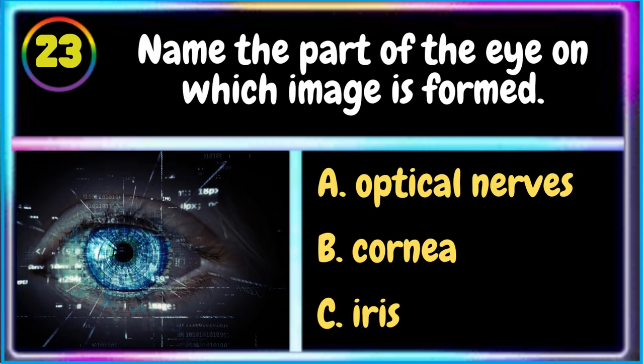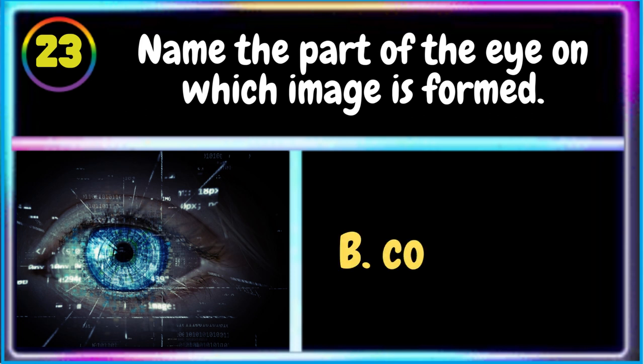23. Name the part of the eye on which image is formed? A. Optical nerves B. Cornea C. Iris. B. Cornea is the correct answer.